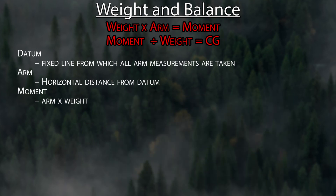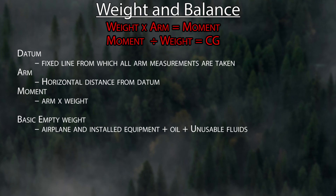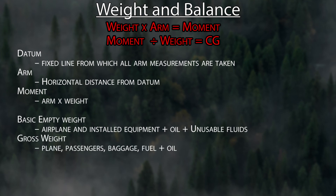Here are a couple more terms before we actually do a calculation. The basic empty weight is the airplane and all the installed equipment, plus the oil and unusable or undrainable fluids. Gross weight is the total weight of the airplane — passengers, baggage, fuel, and oil. That's your maximum airplane weight.